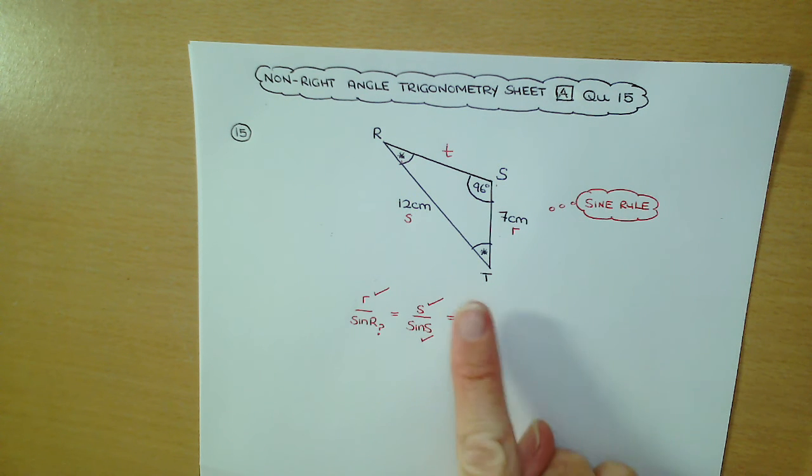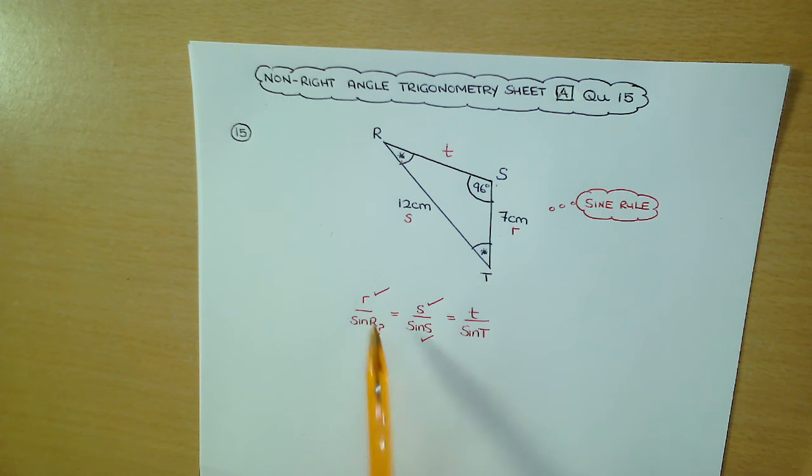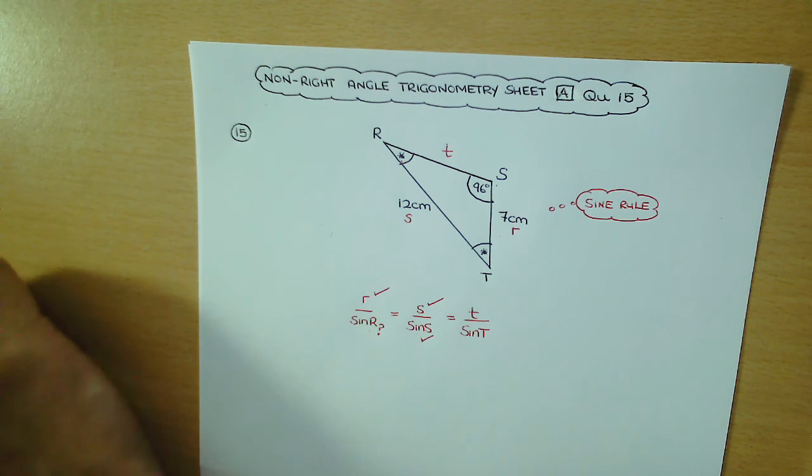We're going to use the first two fractions of the sine rule here. Remember, one of the fractions you work with has to contain the unknown that you're looking for. So we're looking for angle R, and then the other fraction you have to know what's on the numerator and the denominator. So we're going to be working with the first two fractions.